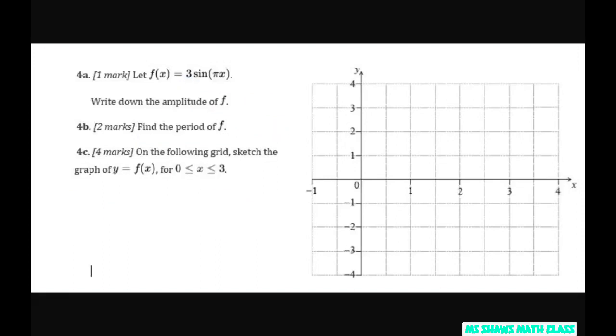And then all we have to do is graph it. So we have the amplitude is 3, period is 2. Now the period means the length of a complete rotation of sine.